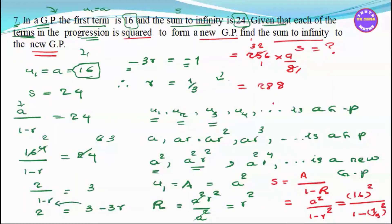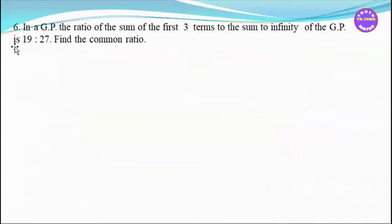The sum to infinity of the new GP is 288. In the new GP, the ratio of the first three terms is U1 plus U2 plus U3.